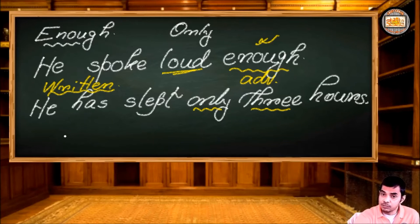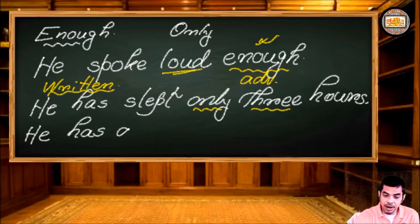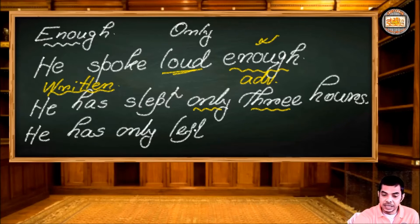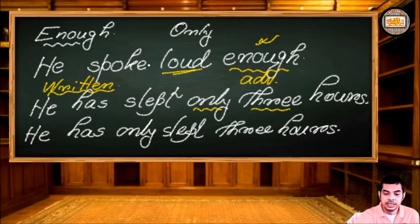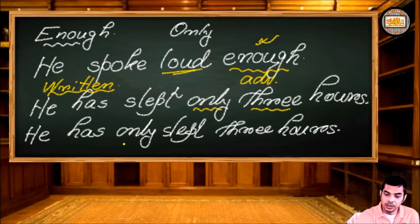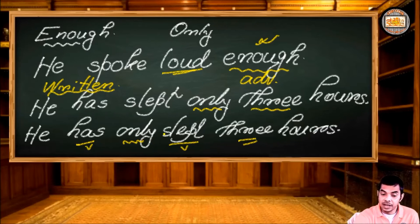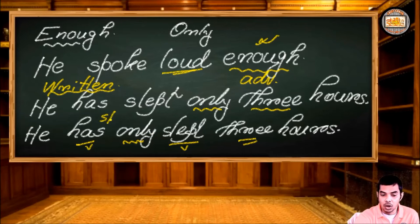But what happens in spoken English? We may produce the same sentence in a different way. Consider: 'He has only slept three hours.' Here, 'only' has been shifted before the verb, splitting the verb phrase. It takes position in the middle of the verb phrase. This placement is characteristic of spoken English.